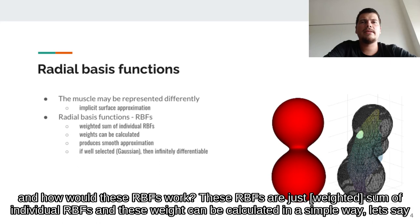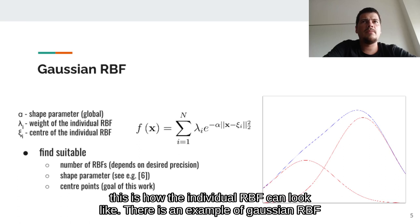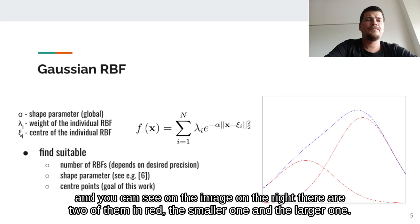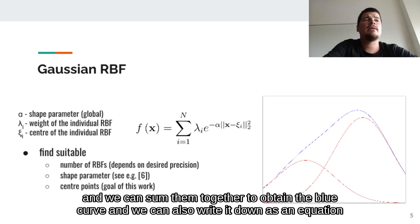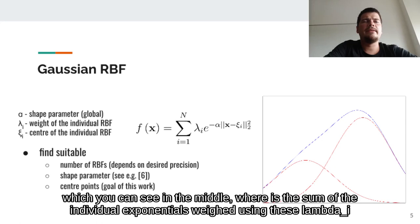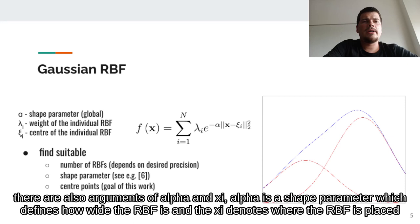This is how an individual RBF can look like. There is an example of a Gaussian RBF, and you can see on the image on the right there are two of them in red — the smaller one and the larger one. When it has lower weight it is smaller, and when it has higher weight it is larger. We can sum them together to obtain the blue curve, written as a sum of individual exponentials weighted by lambda_i. Alpha is a shape parameter which defines how wide the RBF is, and xi denotes where the RBF is placed.